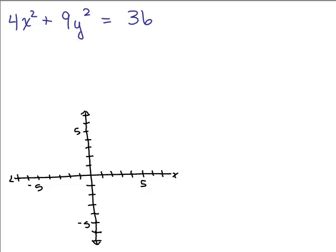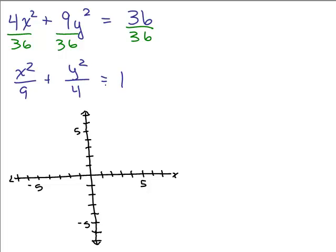Next one. Same thing. We don't have it equal to 1, so the first thing we need to do is divide both sides by 36. So let's divide everything by 36. And we've got x squared over 9 plus y squared over 4 equals 1, which you could also write as x squared over 3 squared plus y squared over 2 squared equals 1.